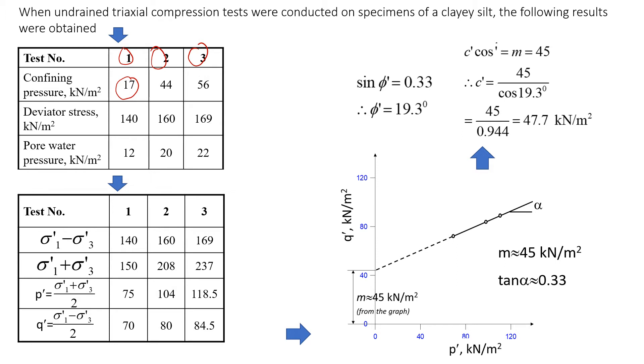The deviator stress at failure was 140. At the end of the test, the pore water pressure in the sample was 12 kN/m². This is just results of one test. We need to have at least three tests to get reliable data.